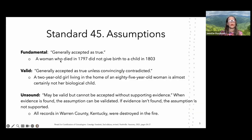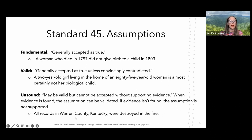Analysis and correlation: we want to look at all of the records we have, analyze them for source information and evidence — who created the source — and then correlate all of the information to verify if there are any conflicts or if everything seems good. If there are conflicts, we want to resolve them before moving on. If they can't be resolved, we want to write an explanation as to why.